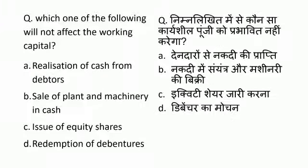Which one of the following does not affect working capital? Options are: Realization of cash from debtors, Sale of plant and machinery in cash, Issue of equity shares, and Redemption of debentures.